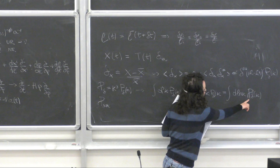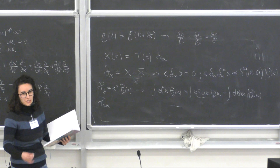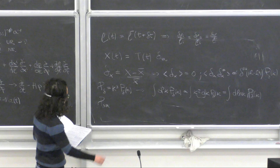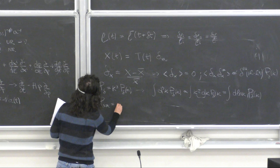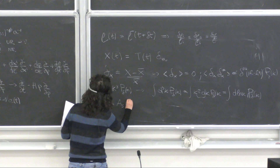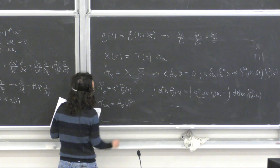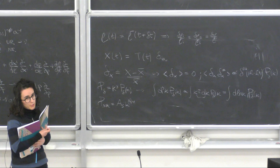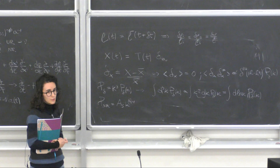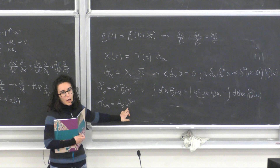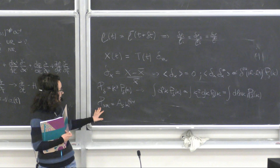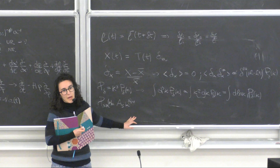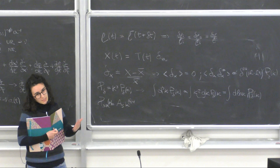The power spectrum of scalar perturbations can be written as an amplitude times a power law with a spectral index n_s, which from observations we observe to be very close to one. One of the key predictions of inflation is that it creates a spectrum of scalar perturbations that is called scale invariant. You can see exactly why it is called scale invariant: if n_s equals one, then the power spectrum does not depend — or depends only very feebly — on the Fourier scale we are considering.